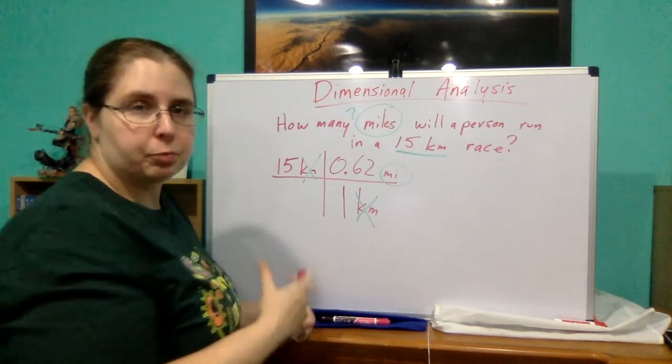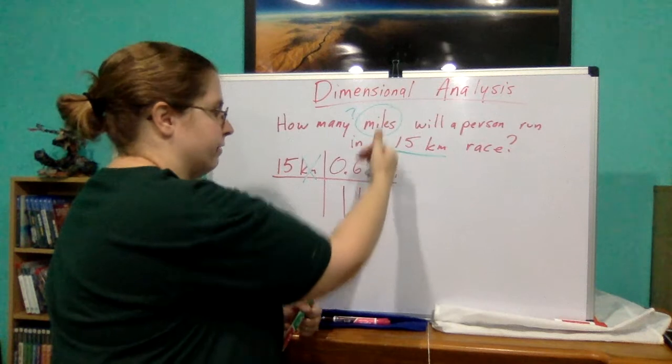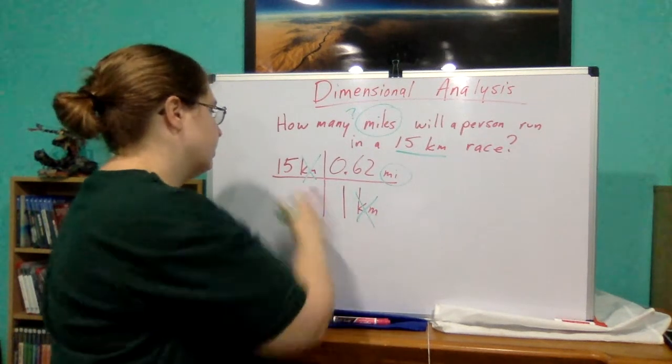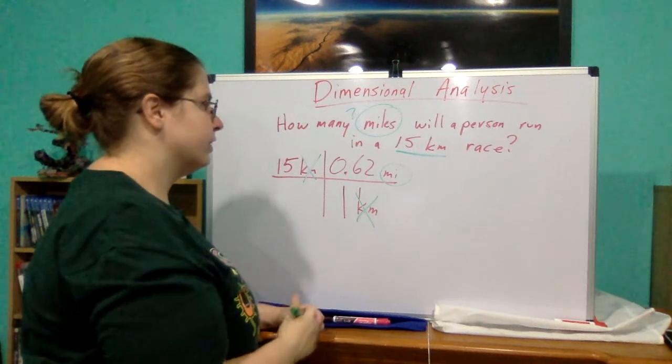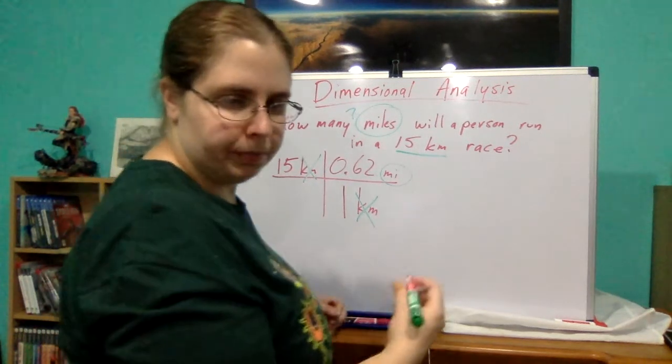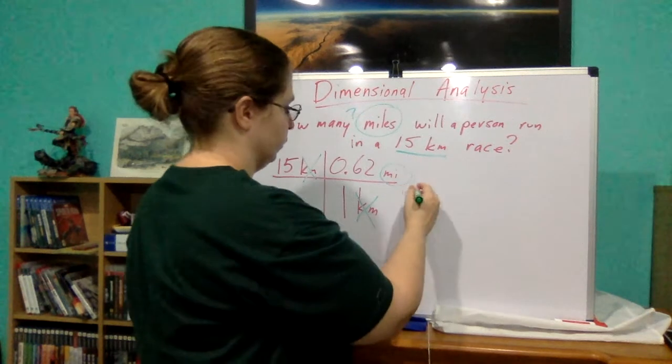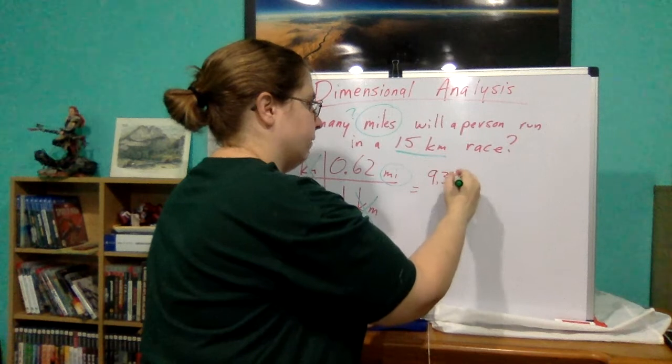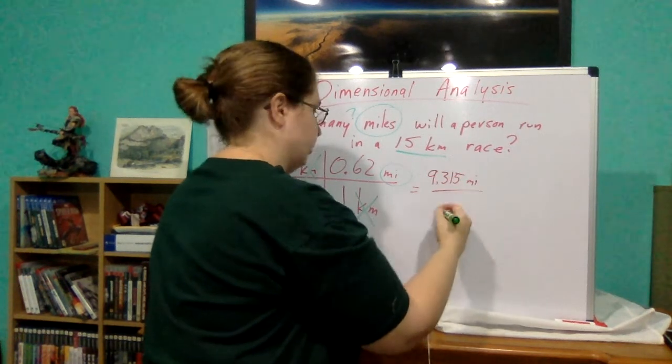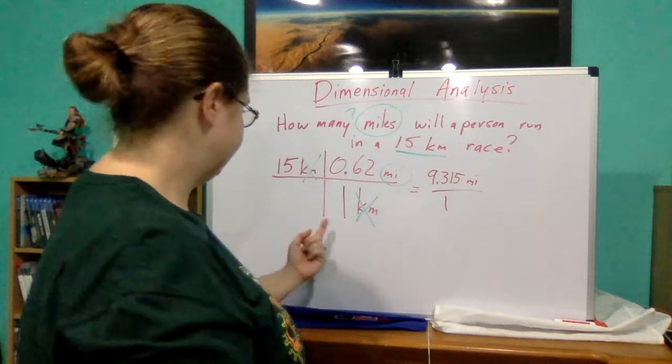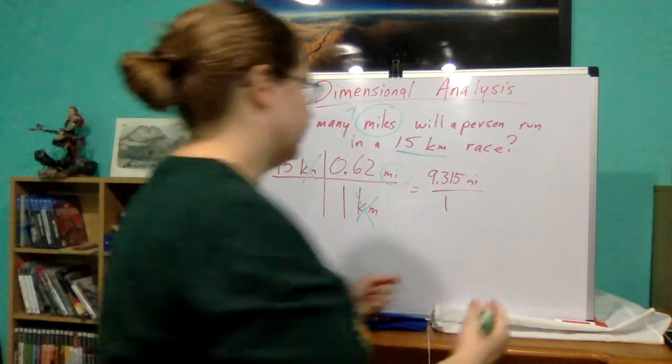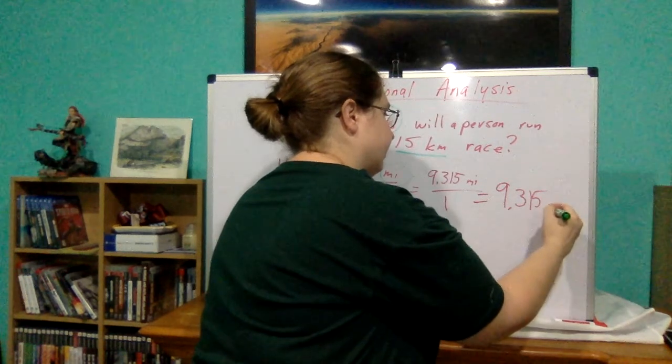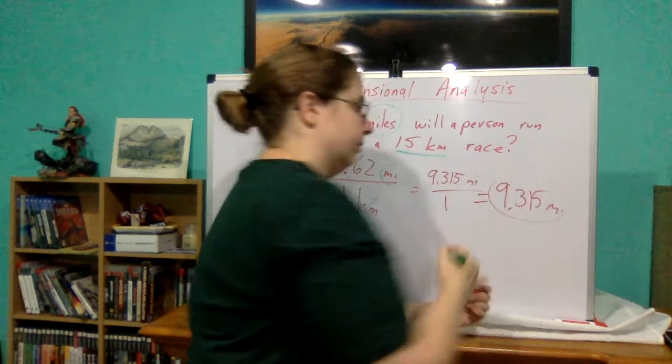And how you do these problems is you multiply across and then divide bottom from top. So, 15 times 0.62 would be 9.315 miles over 1, which would just simply be 9.315 miles. And there's our answer.